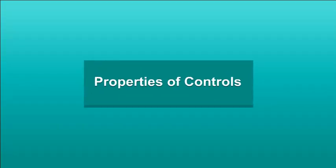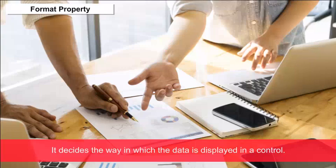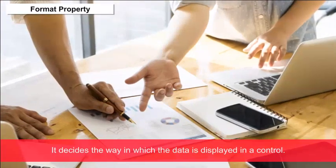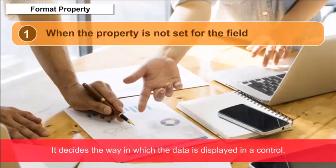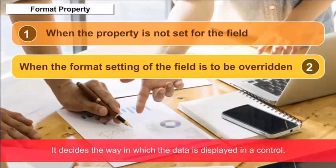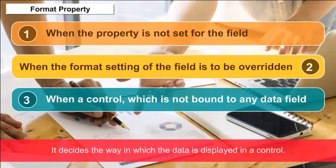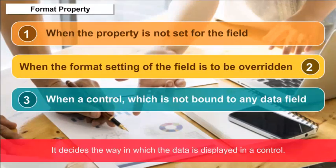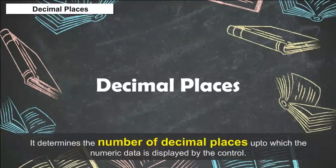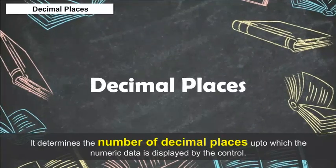Format Property: It decides the way in which the data is displayed in a control. It is set and used in three situations: one, when the property is not set for the field; second, when the format setting of the field is to be overridden; third, when a control not bound to any data field is to be displayed in a particular manner. Decimal Places: Determines the number of decimal places up to which numeric data is displayed by the control.